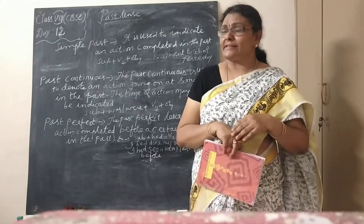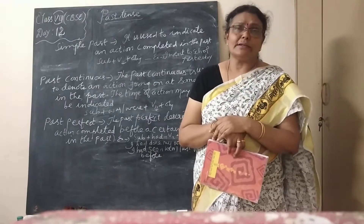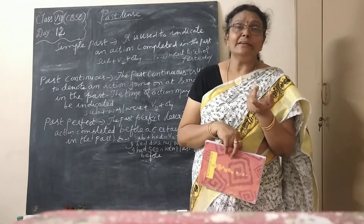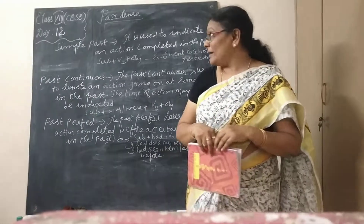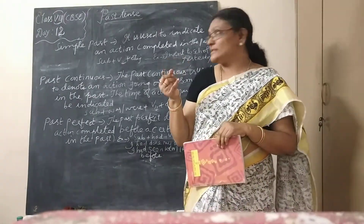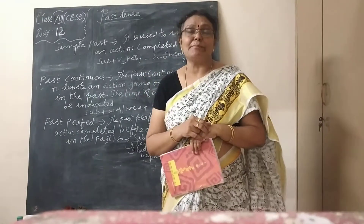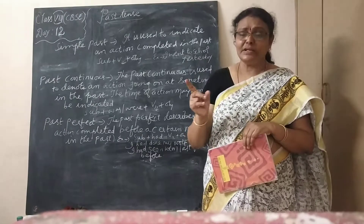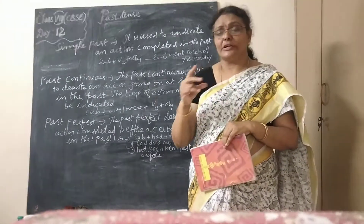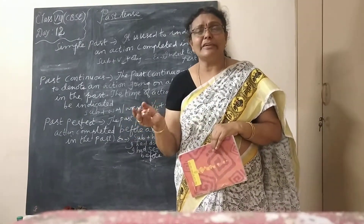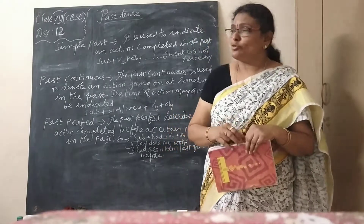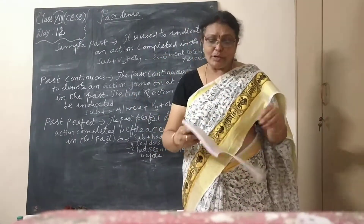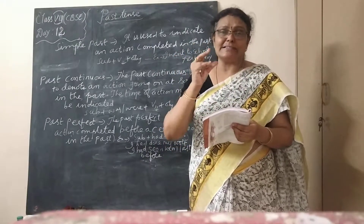These tenses have been subdivided into 4 each. Under present we have simple present, present continuous, present perfect, and present perfect continuous. Under past we have simple past, past continuous, past perfect, and past perfect continuous. Under future we have simple future, future continuous, future perfect, and future perfect continuous. But today I want to teach you only about the past tense, because you have the exercise under past and past perfect.